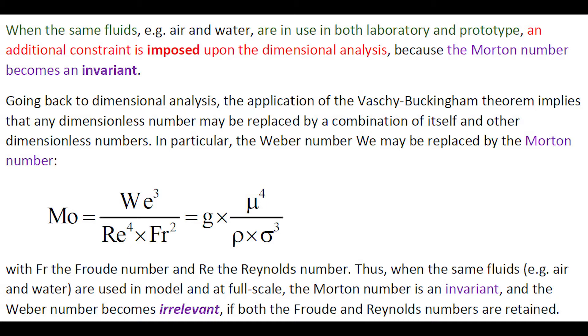In particular, the Weber number may be replaced by the Morton number, as shown here, with Fr the Froude number and Re the Reynolds number.